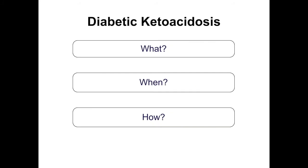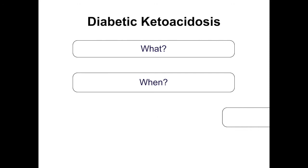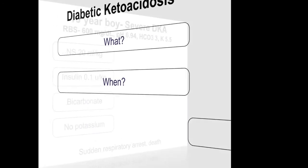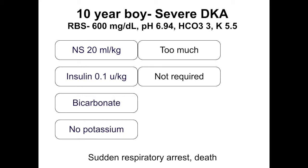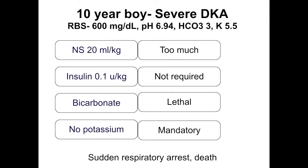Returning to the original case: the child was managed per decade-old guidelines for DKA and had a very poor outcome. Too much fluid was given, an insulin bolus was administered unnecessarily, bicarbonate — now contraindicated — was given, and potassium, which should have been added, was not. These errors are what led to the sudden deterioration and death of this child.